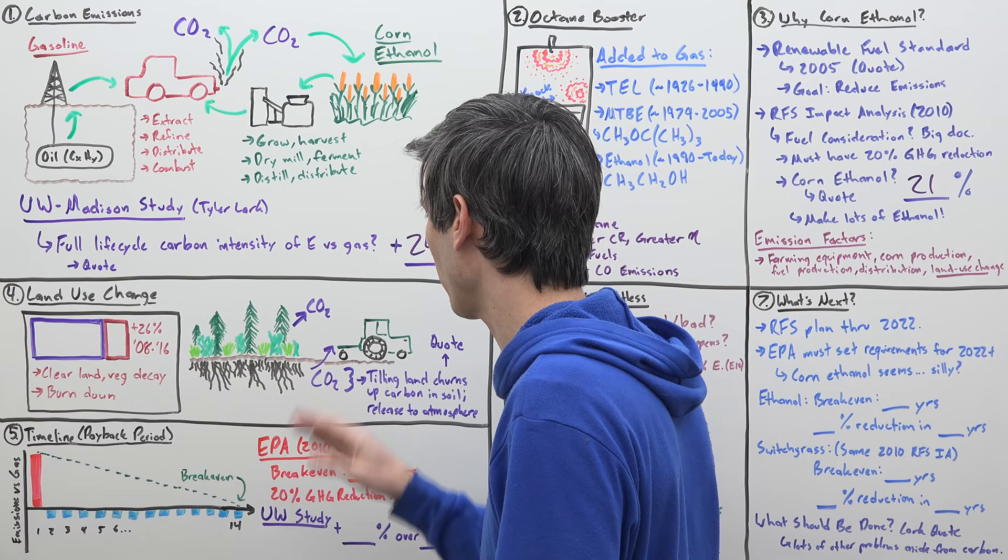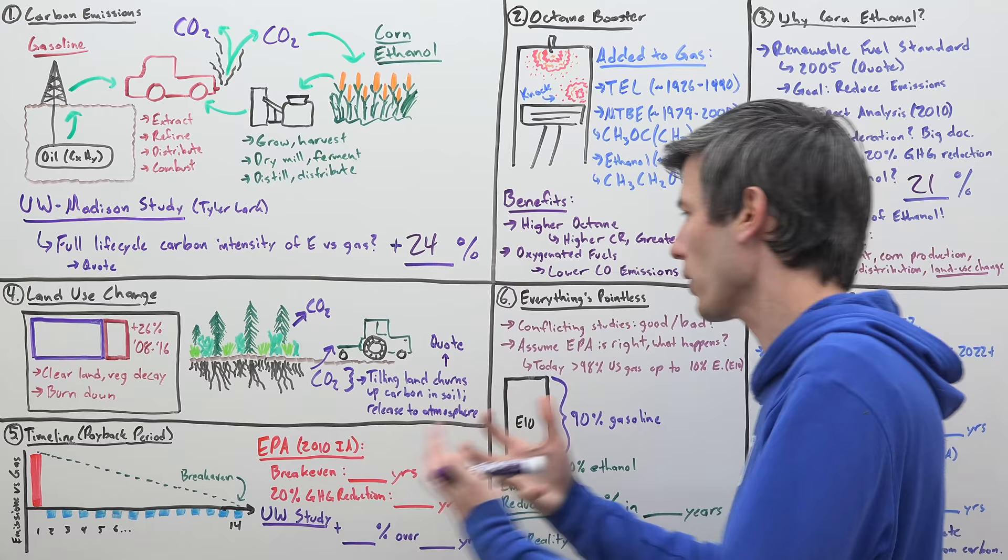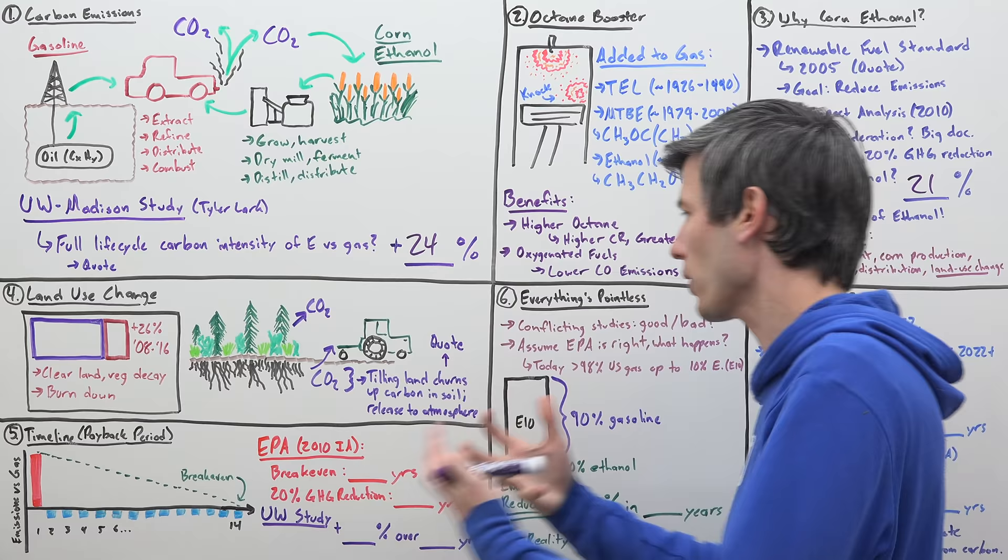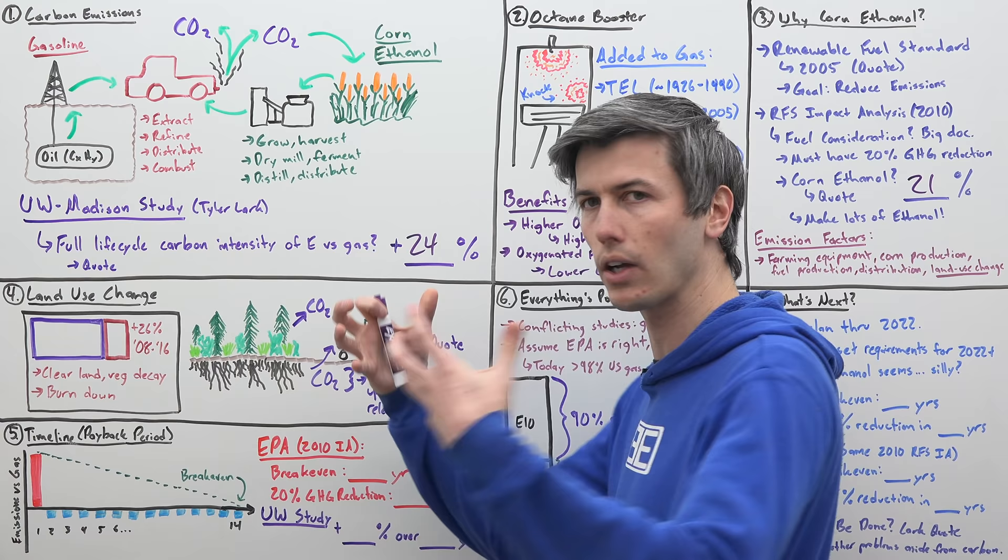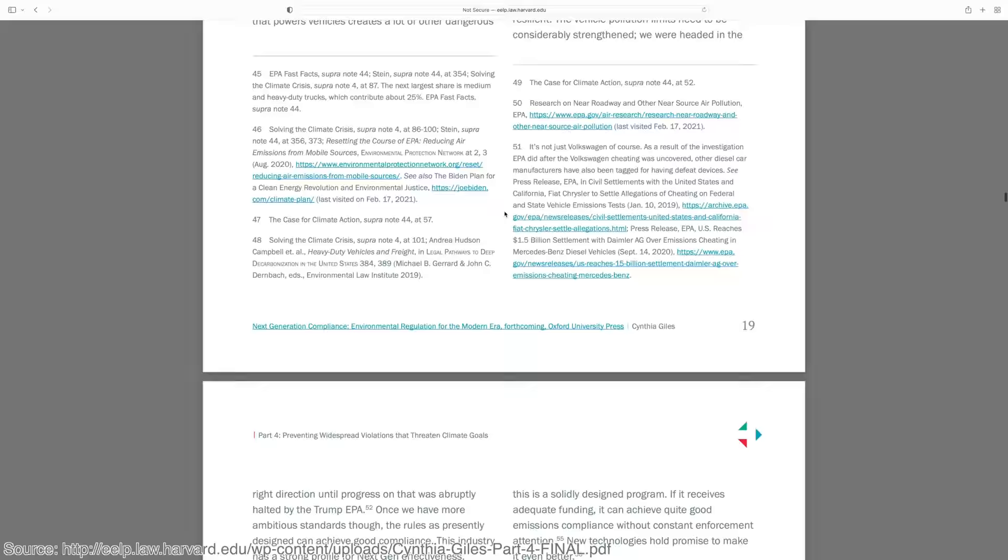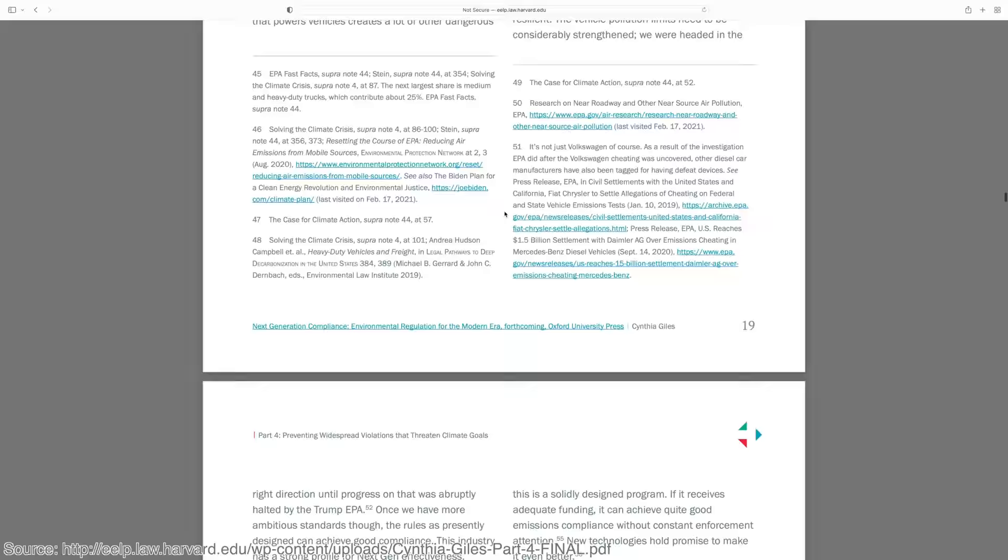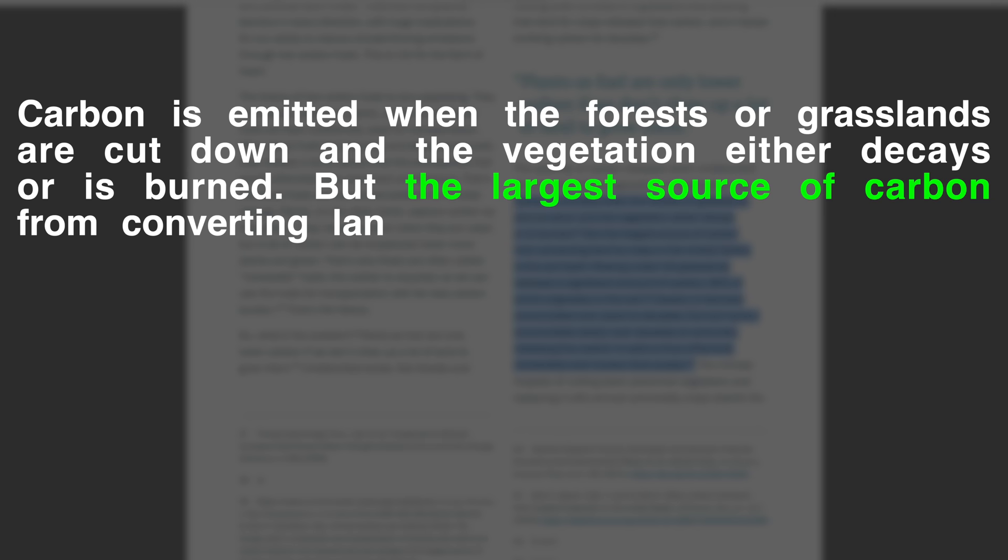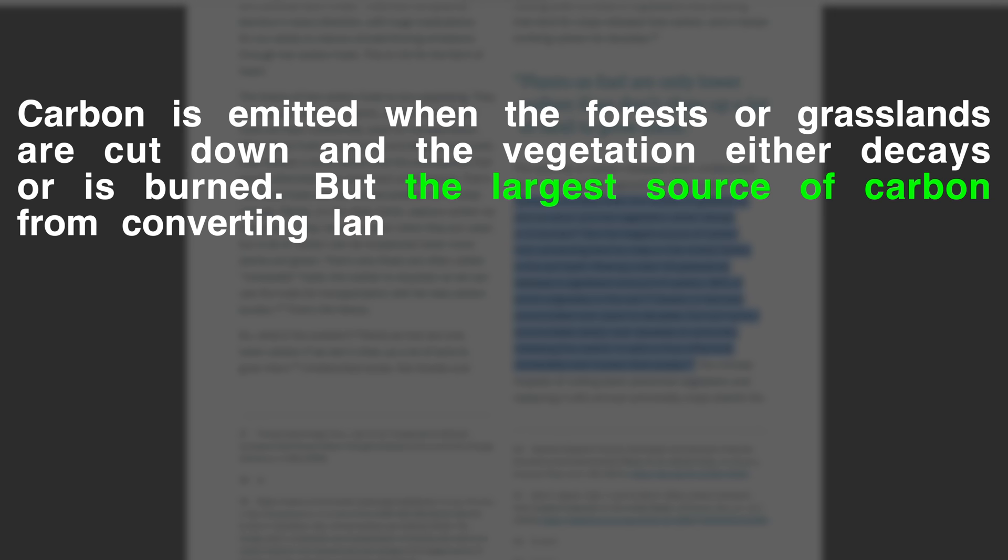But the real emissions from here are from tilling that land once you've cut everything down. So once you till that land, that churns up carbon from within the soil and it releases into the atmosphere. So remember, all these plants and things, they have these root systems, they're constantly putting carbon down into the soil. And when you till that, you take all that carbon from the soil and you put it into the atmosphere.